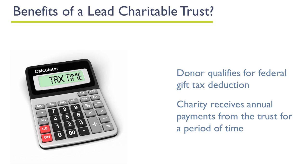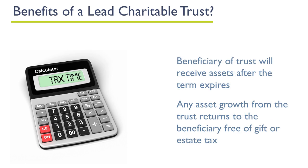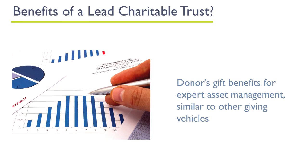The benefits of a charitable lead trust: the donor qualifies for a federal gift tax deduction, so they're trying to get assets to their heirs without paying gift tax. The charity will receive annual payments from the trust for the term of years. The beneficiary of the trust — for example, family members — will receive all the trust assets including appreciation when the trust terminates. Any asset growth that occurs within the trust will be distributed to the trust beneficiary free of gift or estate tax. The donor's gift will also benefit from expert asset management, just like a charitable remainder trust or charitable remainder annuity trust or unitrust.